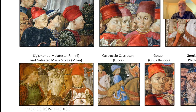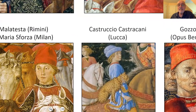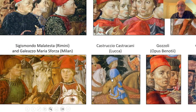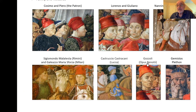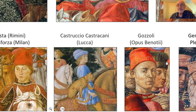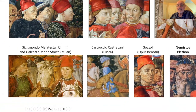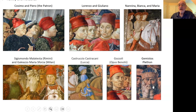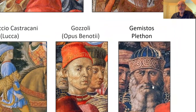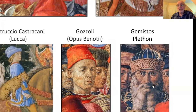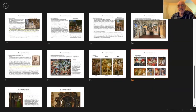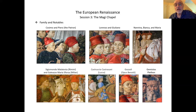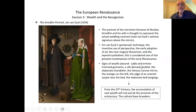The painter himself, Gozzoli, puts himself in the fresco — we know it's him because it says 'Opus Benozii,' this is the work of Benozzo Gozzoli himself. Also present is Gemistos Plethon, the Greek Neoplatonic philosopher who was the teacher of Bessarion and who showed up at the Council in Florence. They surrounded themselves with the glories of Greek learning. All in one magnificent work of art.